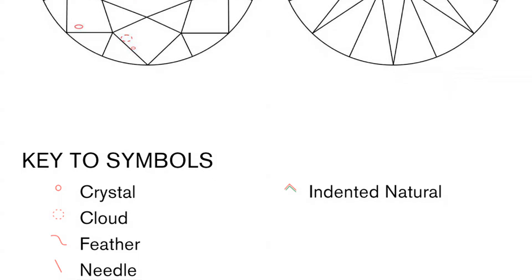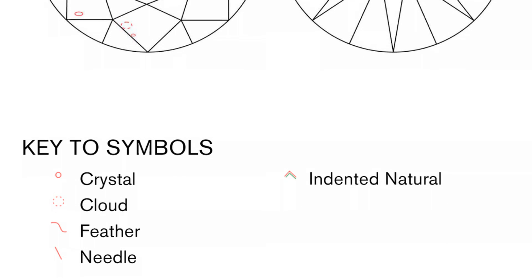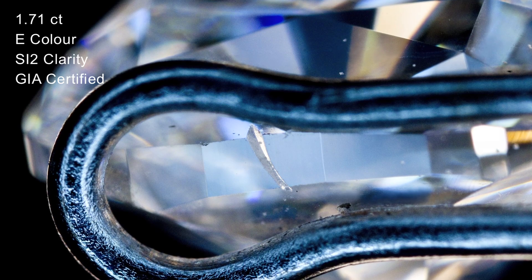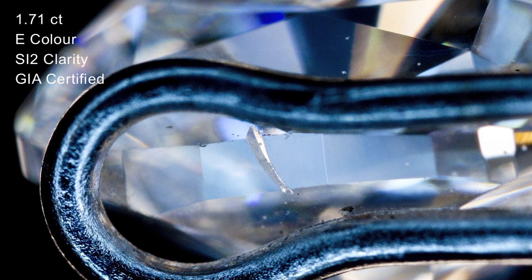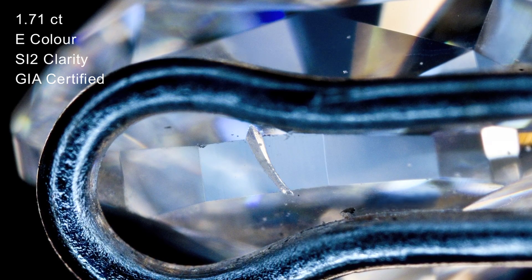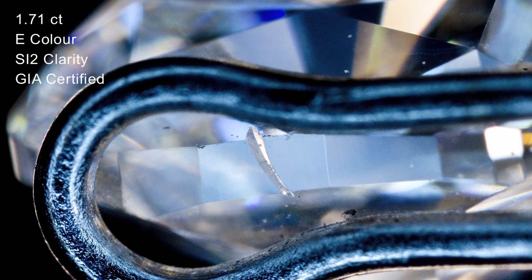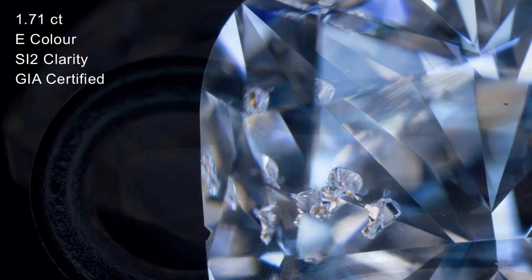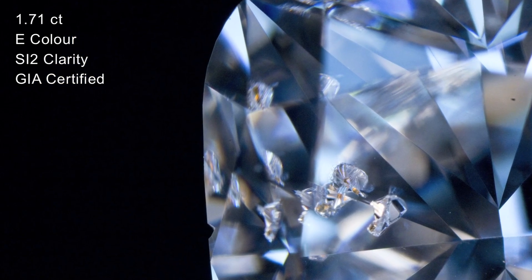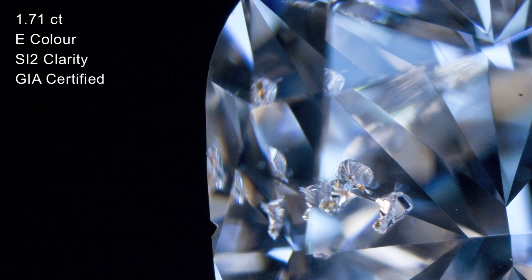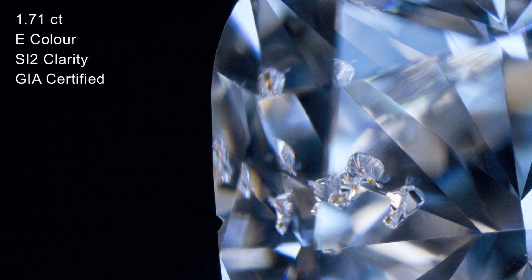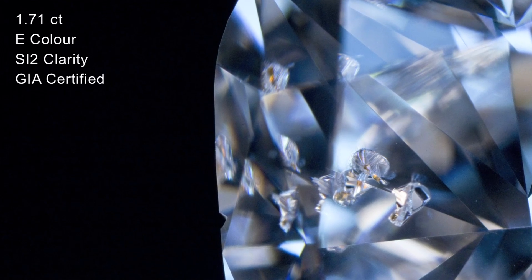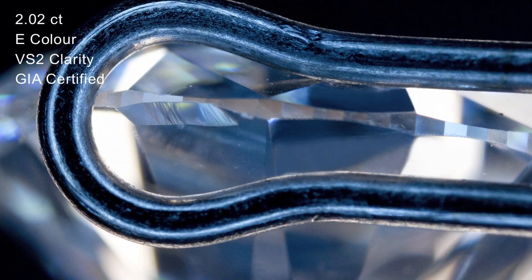The final type of inclusion in this stone is called an indented natural. This is where part of the skin of the rough diamond is left on the surface of the polished stone, and that then intrudes into the diamond. Now, although, strictly speaking, it's not an inclusion in the regular sense, it is counted as one, as it does break the natural surface of the stone. And when it doesn't break the surface, it's simply called a natural, and it's not counted as an inclusion.